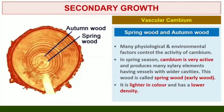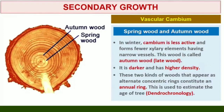Spring wood and autumn wood: The activity of cambium is under the control of many physiological and environmental factors. In temperate regions, the climatic conditions are not uniform through the year. In spring, cambium is very active and produces a large number of xylem elements having vessels with wider cavities; the wood formed during this season is called spring wood or early wood. In winter, the cambium is less active and forms fewer xylem elements with narrow vessels; this wood is called autumn wood or late wood. Spring wood is lighter in color and has a lower density, whereas autumn wood is darker and has a higher density. The two kinds of woods appearing as alternate concentric rings constitute an annual ring. Annual rings seen in a cut stem give an estimate of the age of the tree.